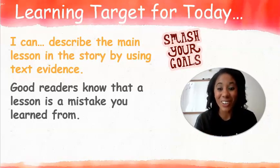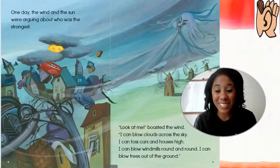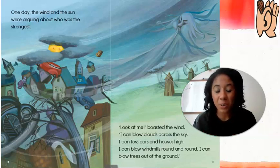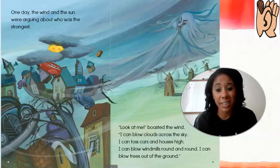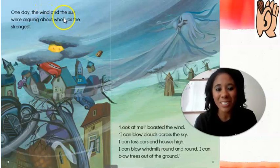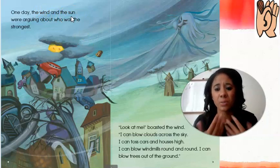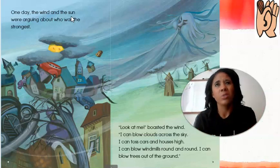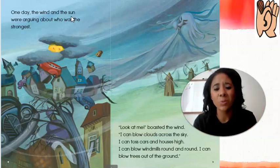Today you guys are going to describe the main lesson in the story by using text evidence. We know good readers always go back in that text to find text evidence. We also know that good readers know that a lesson is a mistake that you've learned from. What was going on with the wind and the sun? What were they doing?